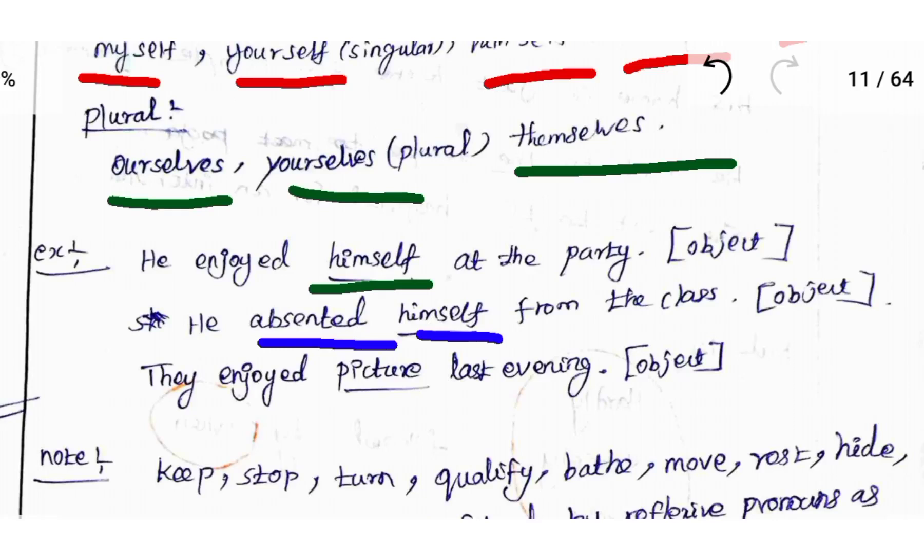Reflexive pronoun acts as object here. They enjoyed picture last evening. Here, picture is an object.